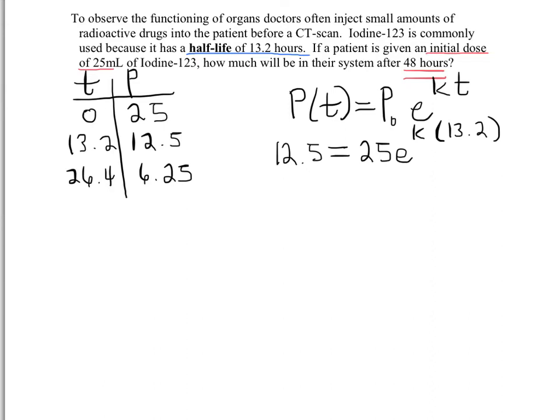Get rid of the coefficient. Let's divide both sides by 25, get rid of anything we can get rid of first. That gives us one half—big surprise—half-life equals e to the K times 13.2. We need to undo our E function so we need to throw in a natural log.